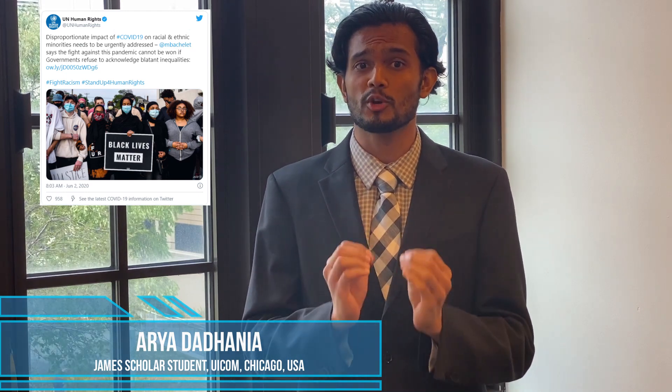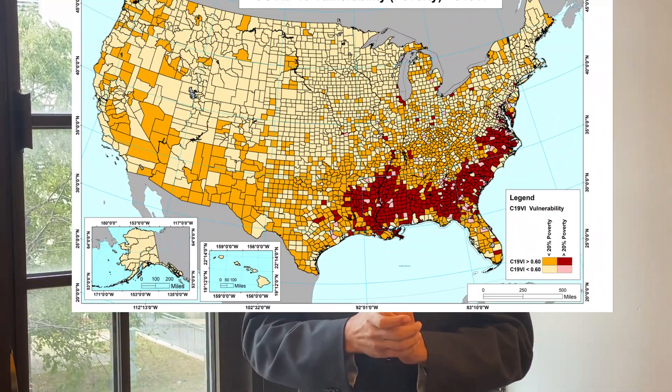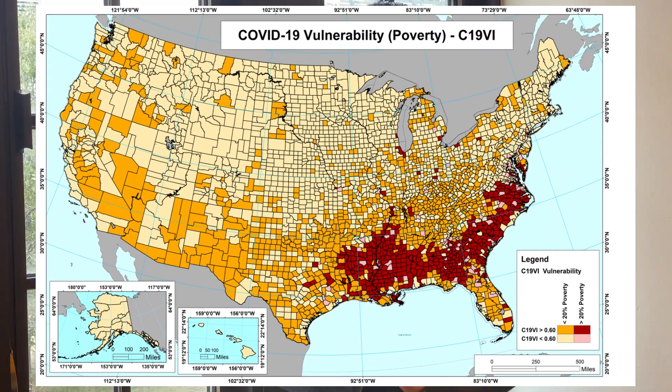The coronavirus has now infected more than 5.7 million people across the country, of which minority populations and people with low socioeconomic status are being disproportionately affected. Our C19VI reveals that more than 75 percent of Black American communities are in highly COVID-19 vulnerable regions. Our index also describes that more than 82 percent of economically poor Americans live in highly COVID-19 vulnerable communities.